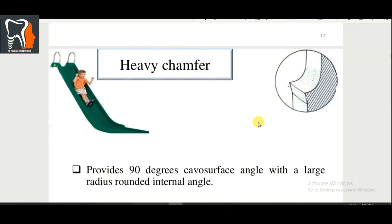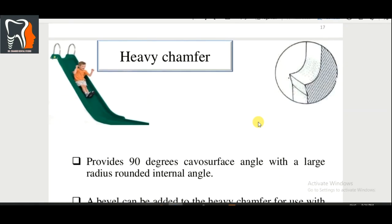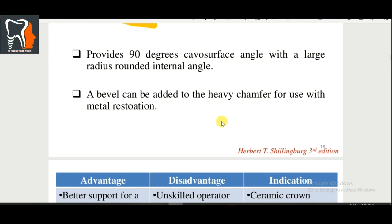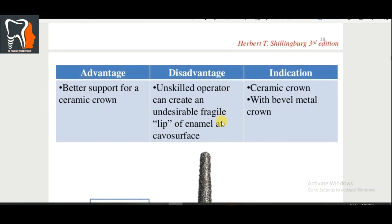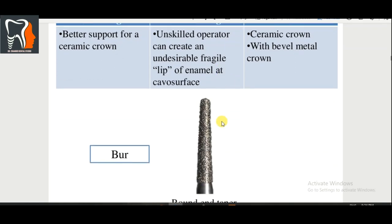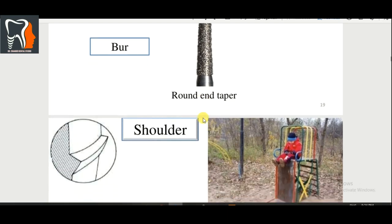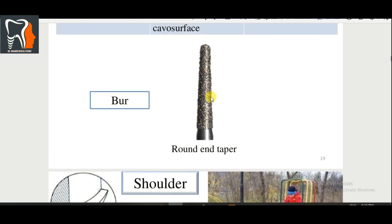Heavy chamfer: the slant is more pronounced here. It provides approximately a 90-degree cavosurface angle with a large-radius rounded internal angle. A bevel can be added to the heavy chamfer for use with metal restorations. Advantage: better support for ceramic crowns. Disadvantage: an unskilled operator can create an undesirable fragile lip of enamel at the cavosurface. Indication: ceramic crowns and metal crowns. Bur: round-end taper.